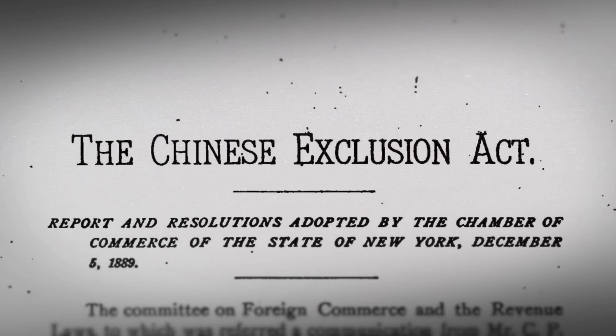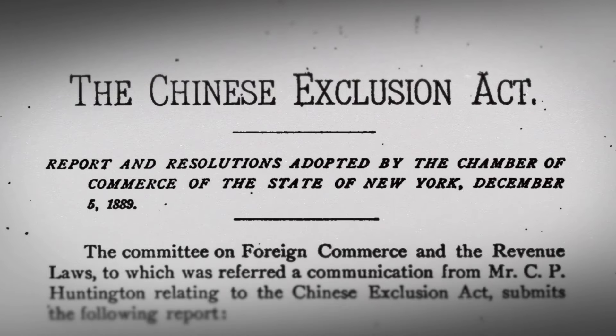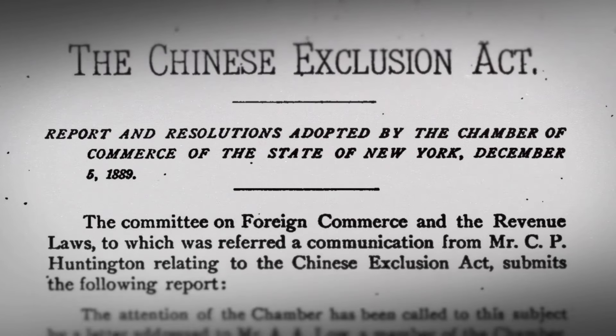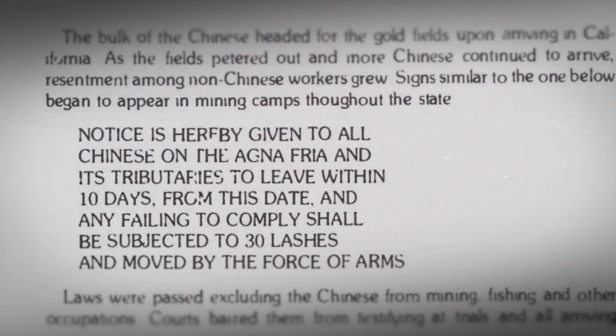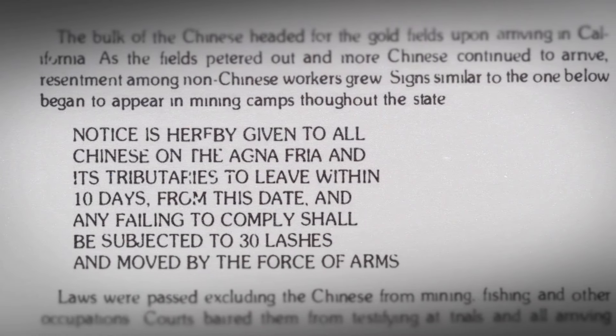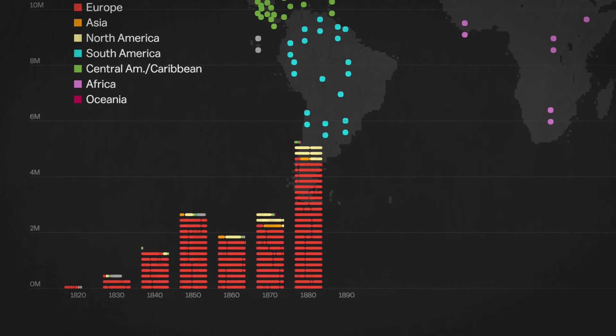But in 1882, the U.S. passed the Chinese Exclusion Act, which banned Chinese immigration for 10 years. That was extended and then made permanent, and it wasn't repealed for 61 years.